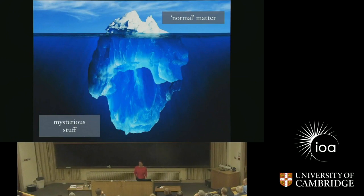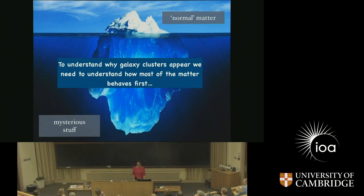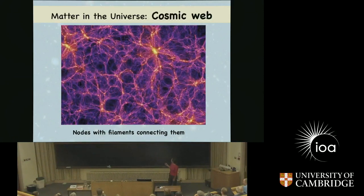But if you get serious about galaxy clusters and want to understand why galaxy clusters appear, we need to first understand how most of the matter is actually distributed. We can understand how dark matter is distributed via computer simulations. And I'm just going to show you what we think the distribution of dark matter in our universe looks like. You arrive at a picture like this — what you see here is what we call a cosmic web, and that's just how we imagine dark matter to be distributed. Wherever it's yellowish, there you have more dark matter; wherever it's dark, there's almost no dark matter there.